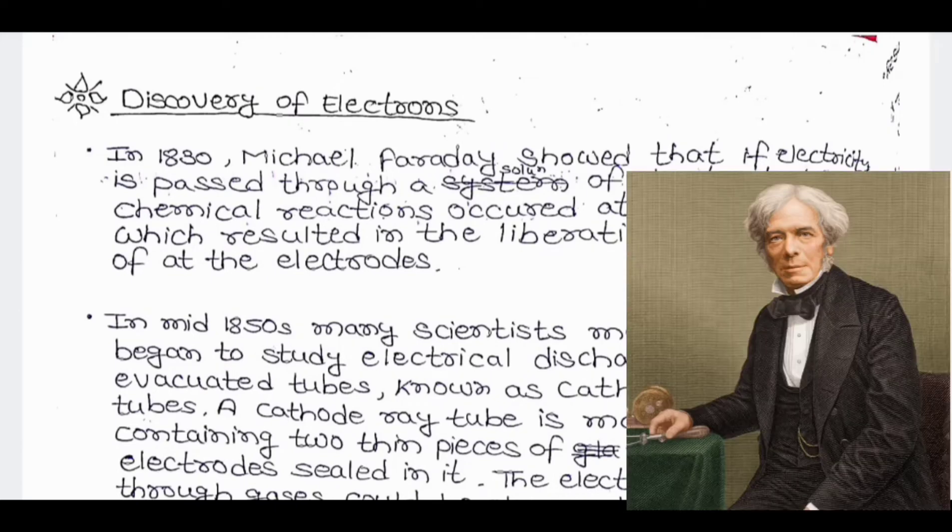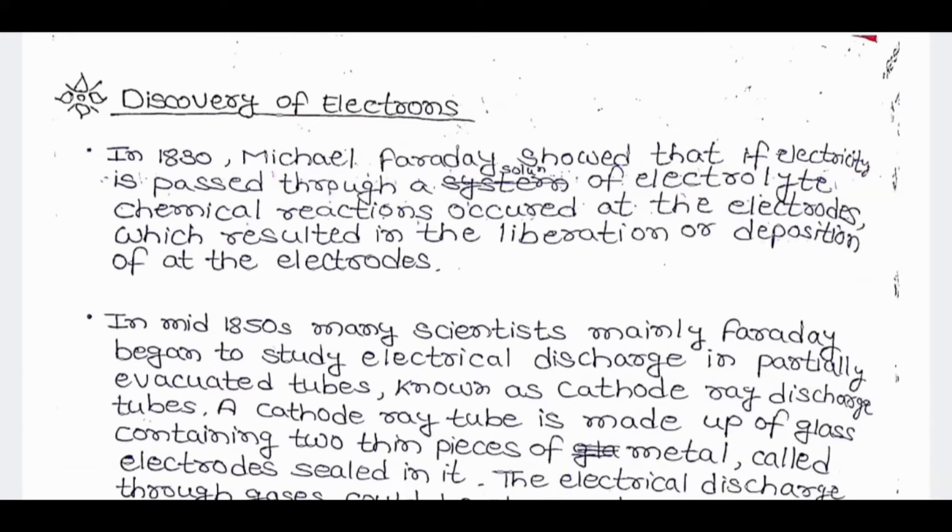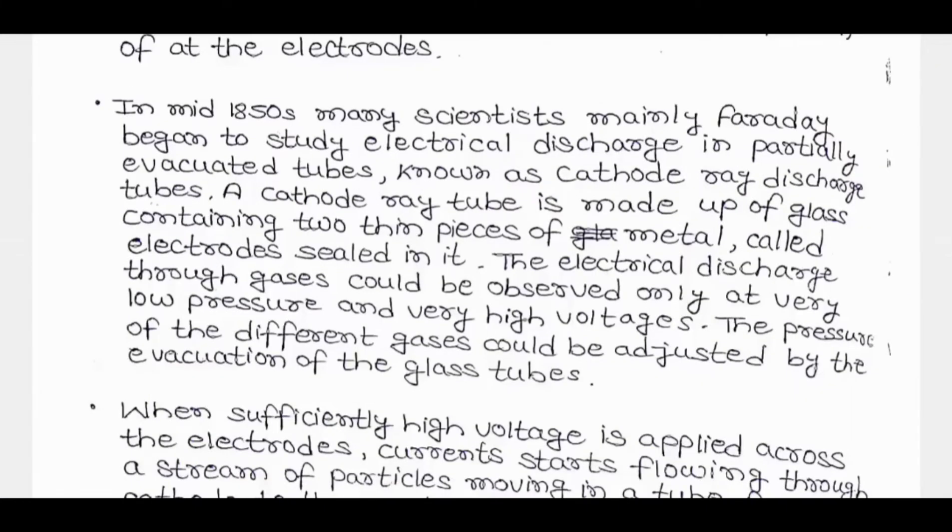Discovery of electrons: In 1830, Michael Faraday showed that if electricity is passed through a solution of electrolyte, chemical reaction occurred at the electrodes which resulted in liberation or deposition at the electrodes. In mid-1850s, many scientists, mainly Faraday, began to study electrical discharge in partially evacuated tubes known as cathode ray discharge tubes.